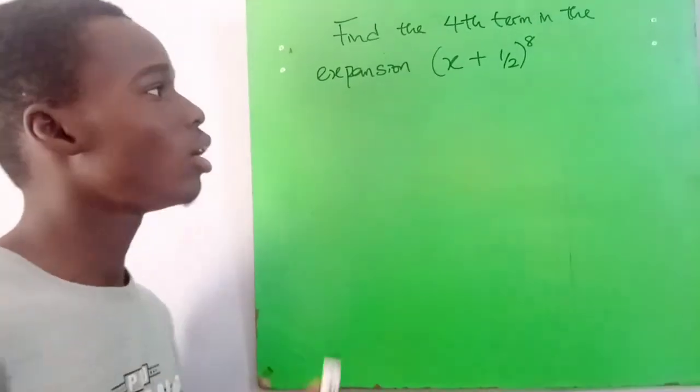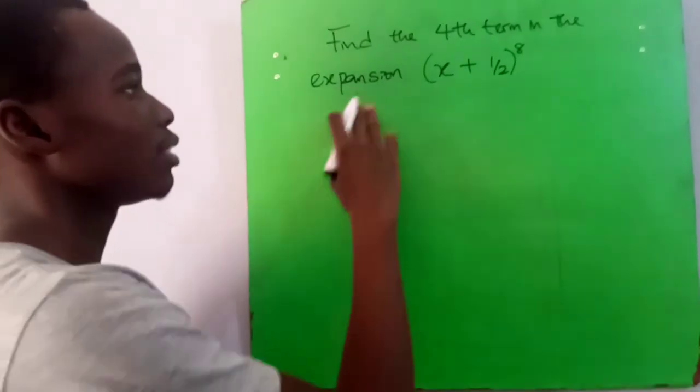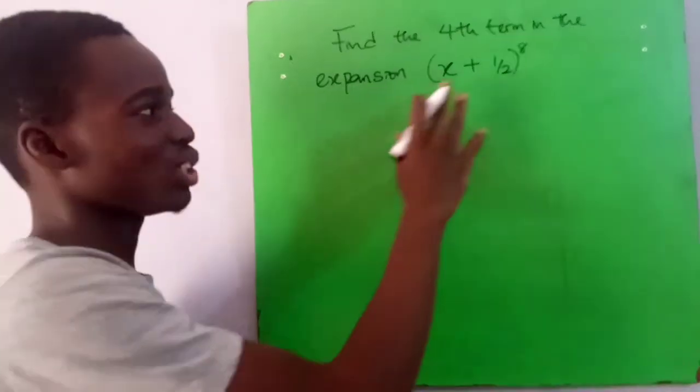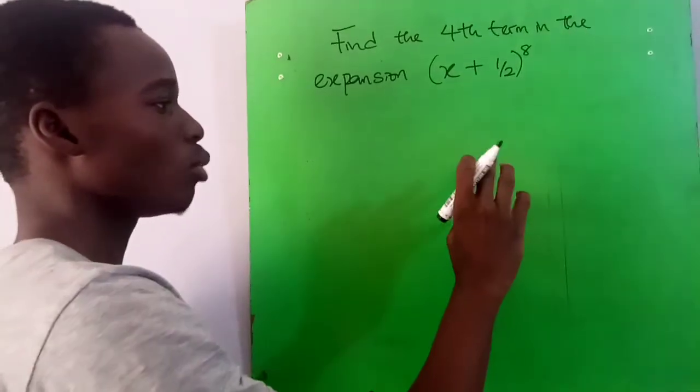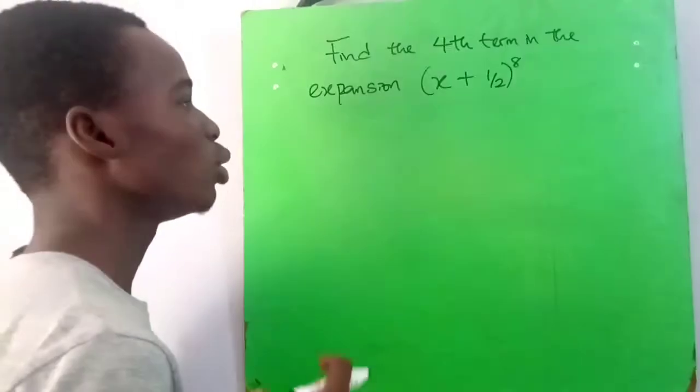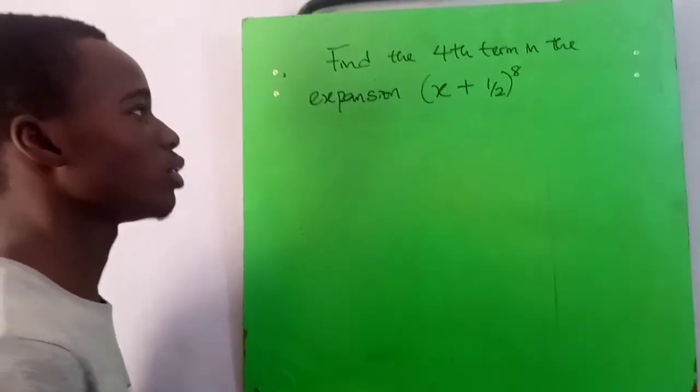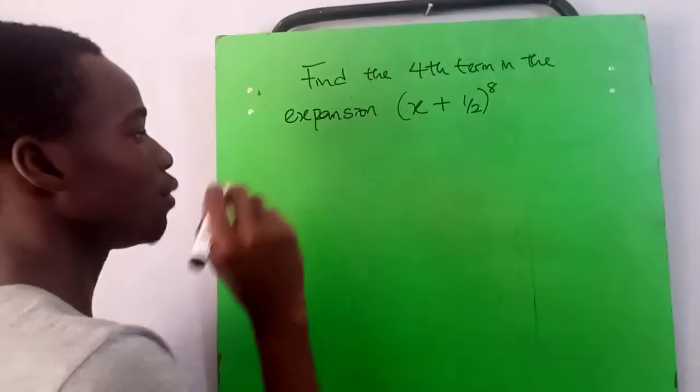Hello, today we'll be solving a question from WAEC past question number 111. Find the fourth term in the expansion of (x + 1/2)^8. So after we've expanded everything, what will be the fourth term? But mind you, it's a WAEC exam, so you have to know shortcuts and ways of solving it.